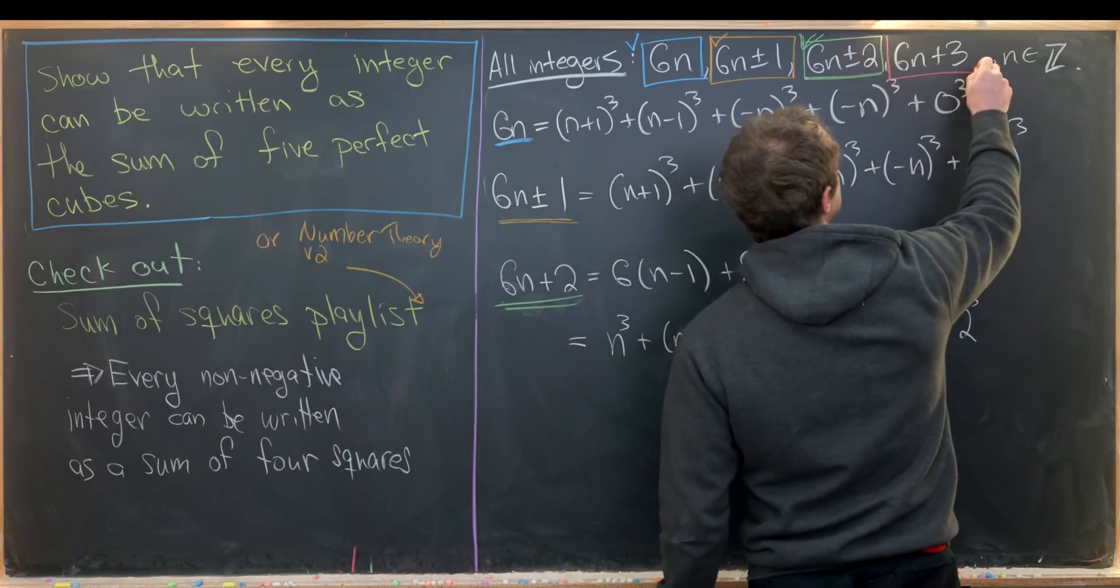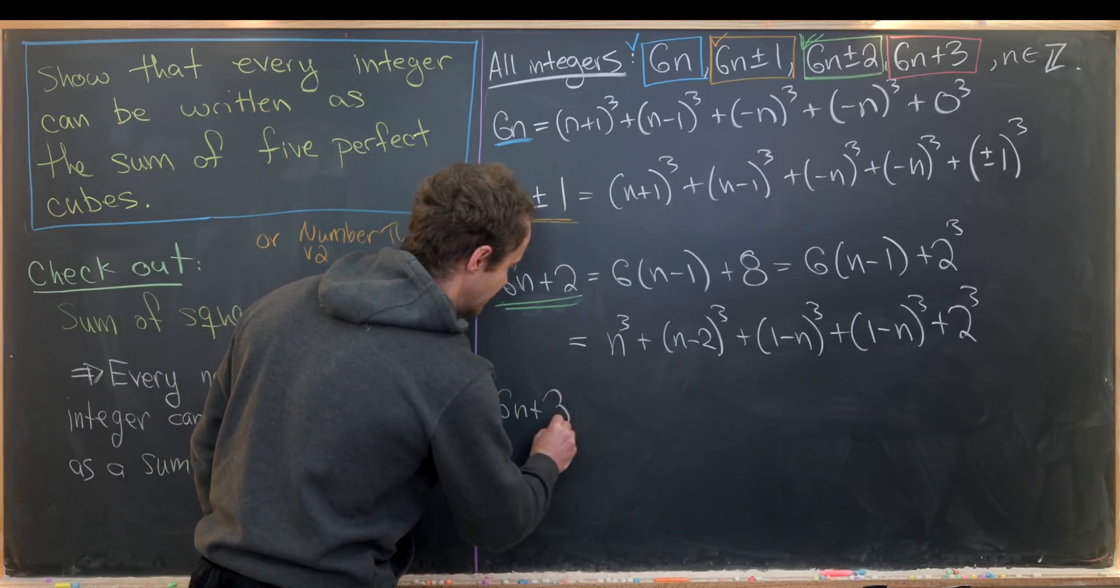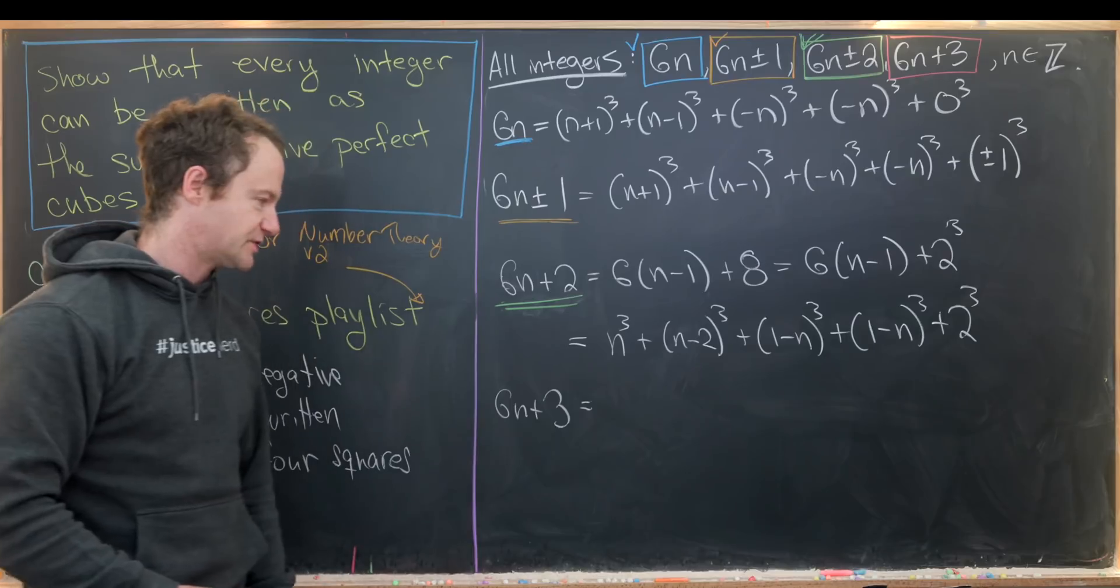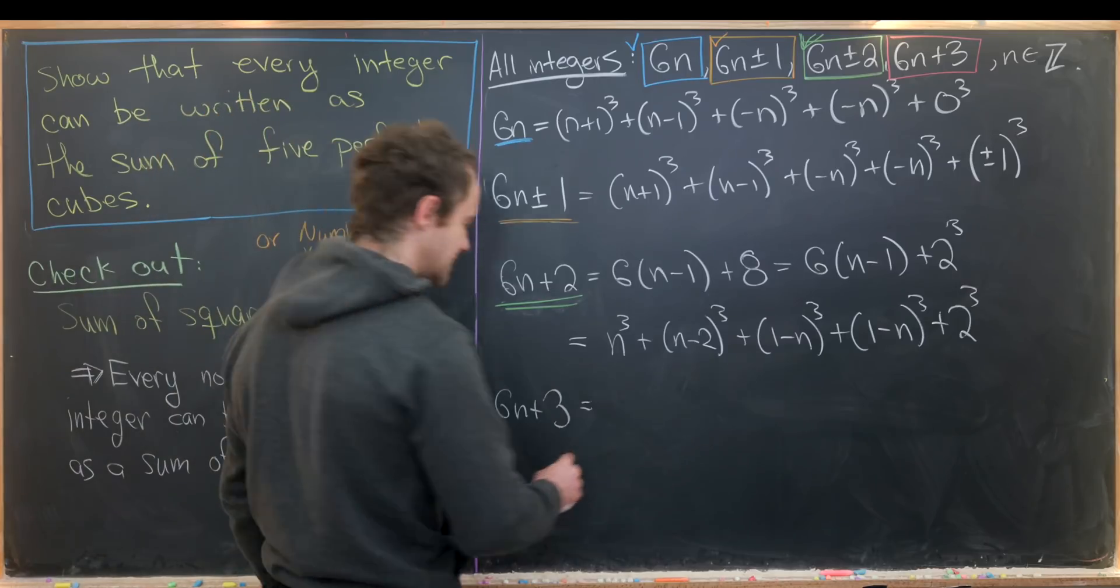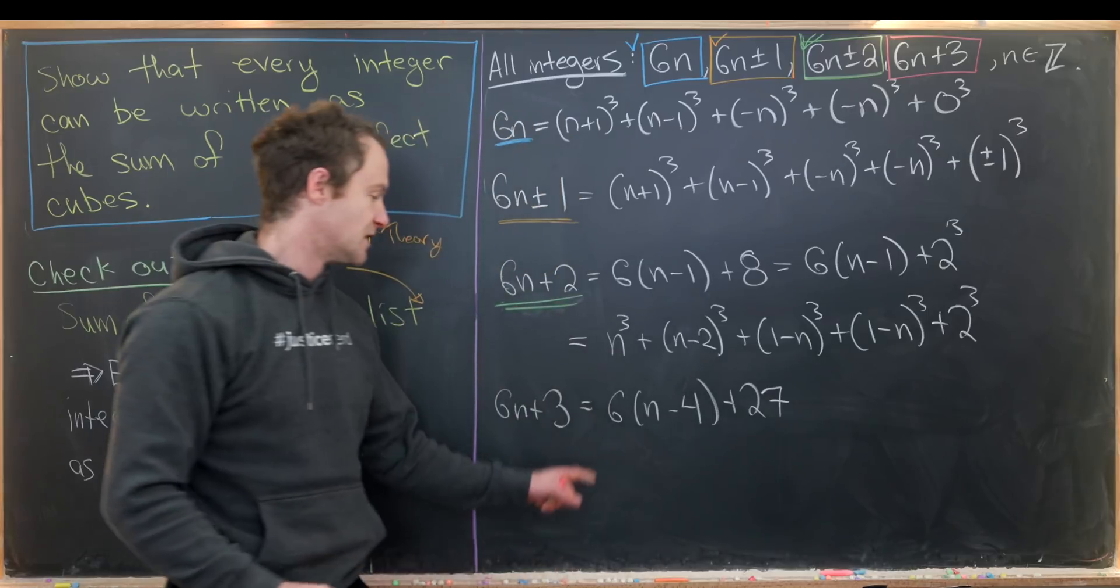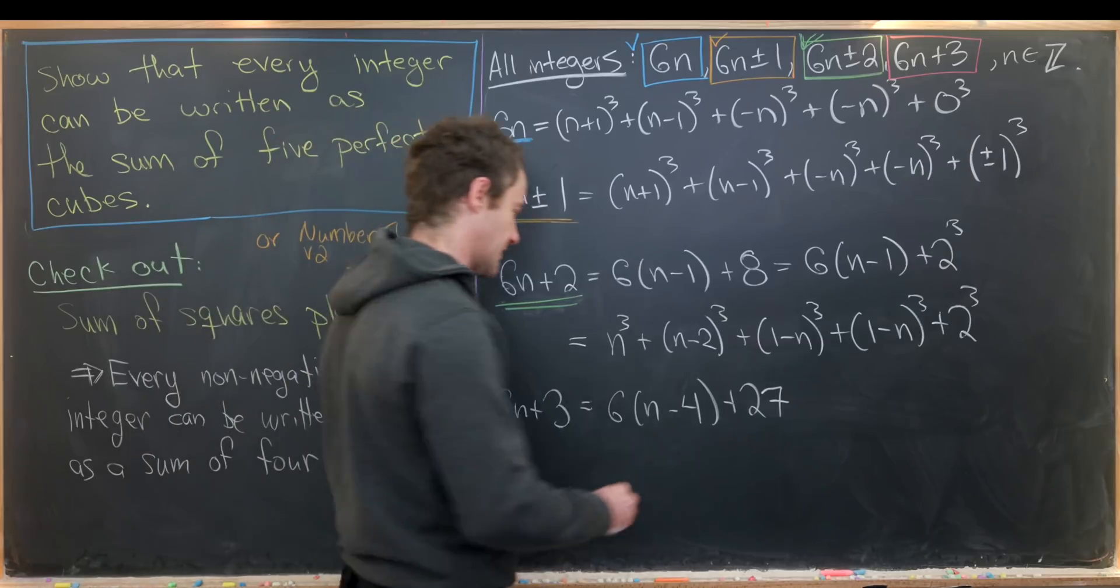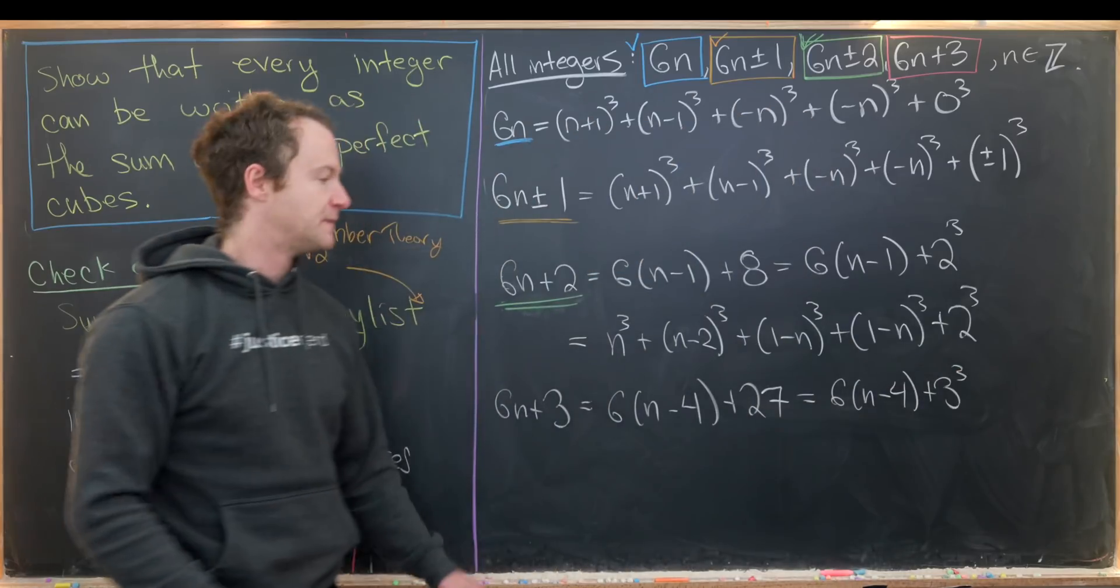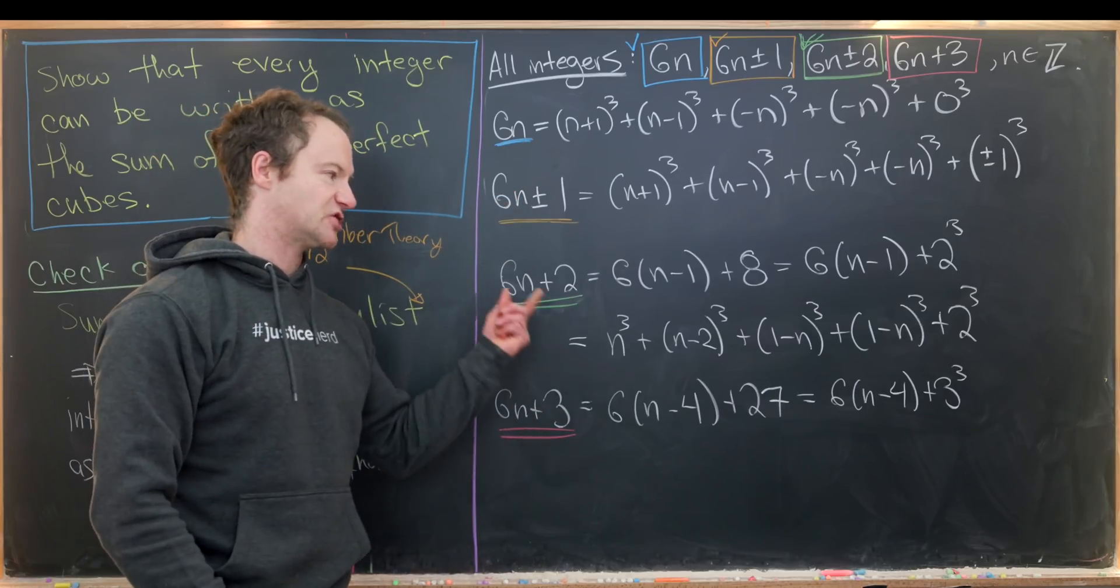Now let's move on to this 6n+3 case. We'll play a similar game to what we did for the 6n+2 case. It's a little bit trickier because we need to go all the way up to 3³ or 27. So somehow we want to get 27 out of this. But that's not too bad. We've got 6(n-4) + 27. Notice 6 times -4 will be -24 plus 27 is 3. So we're good to go there. This will be 6(n-4) + 3³.